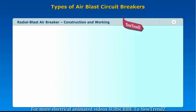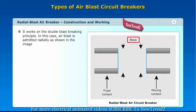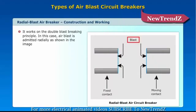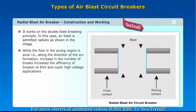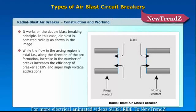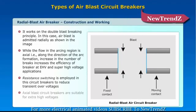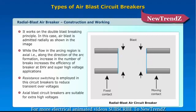Radial blast air breaker construction and working. It works on the double blast breaking principle. In this case, air blast is admitted radially as shown in the image, while the flow in the arcing region is axial — that is, along the direction of arc formation. Increasing the number of breaks increases the efficiency of the breaker at EHV and super high voltage applications. Resistance switching is employed in the circuit breakers to reduce transient overvoltages. Axial blast circuit breakers are suitable for extra high voltage applications.